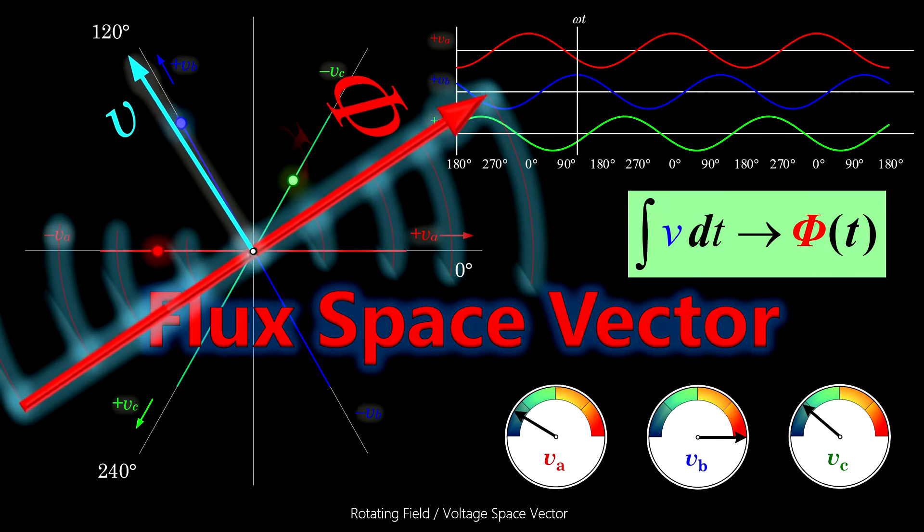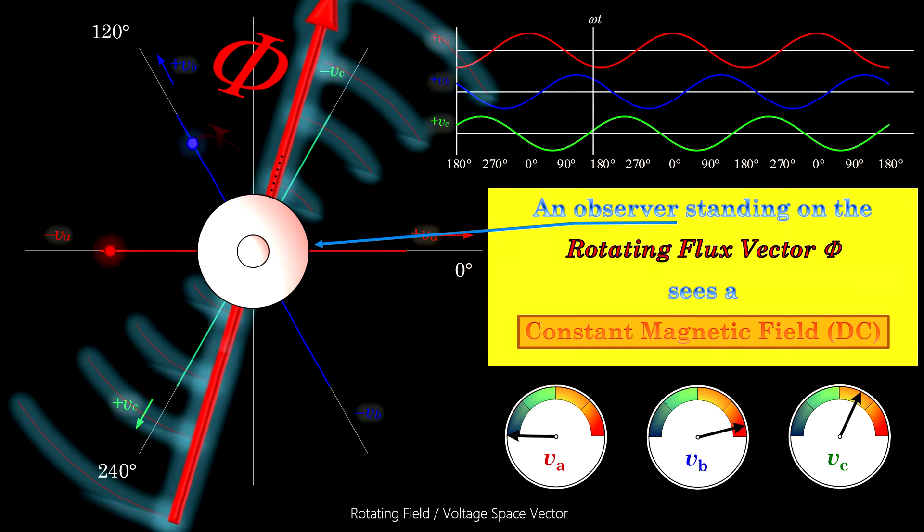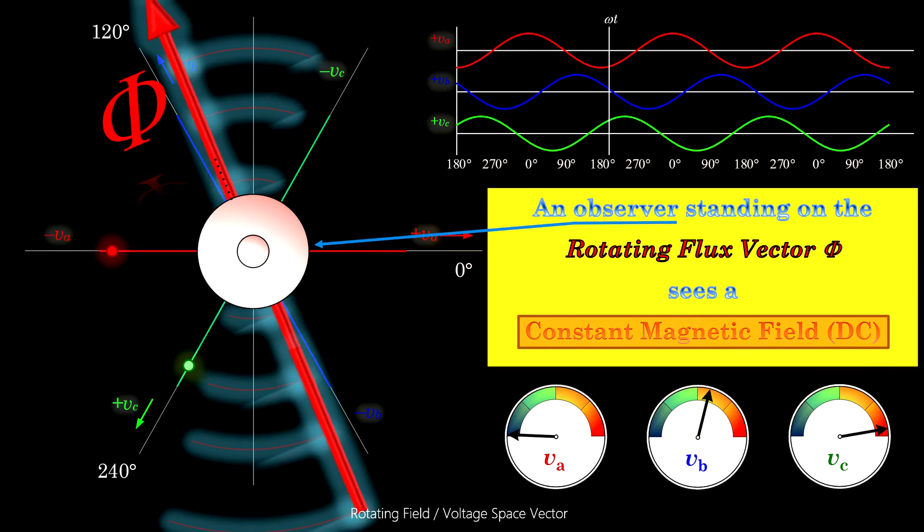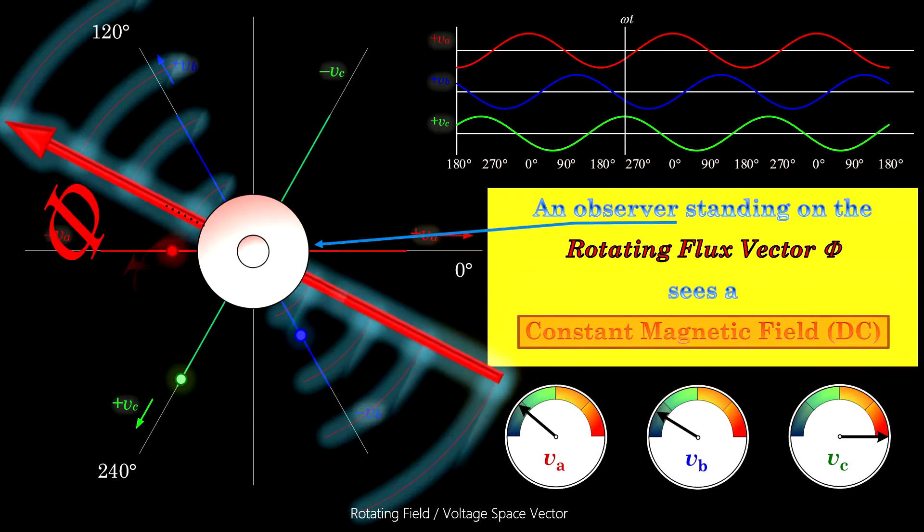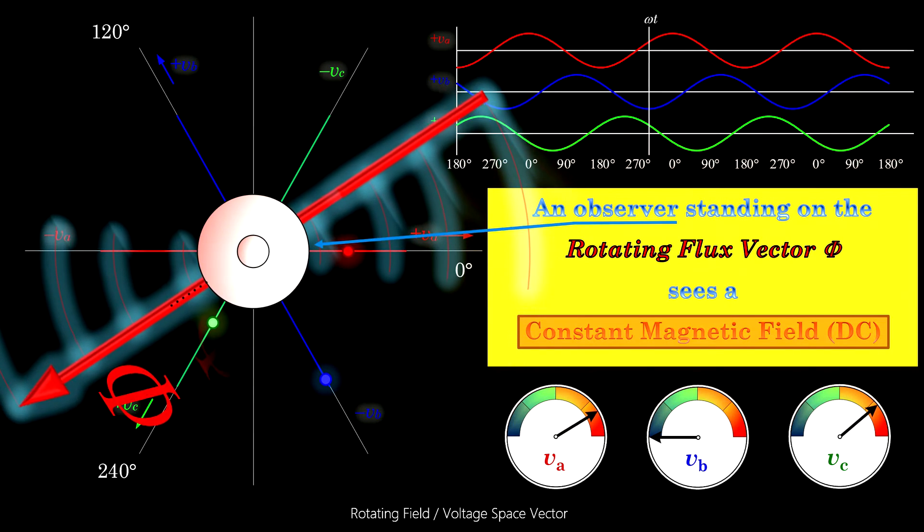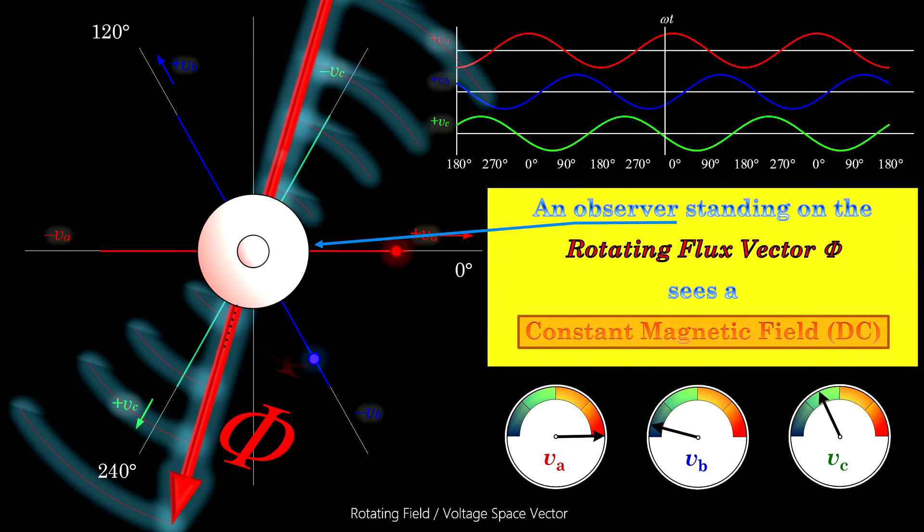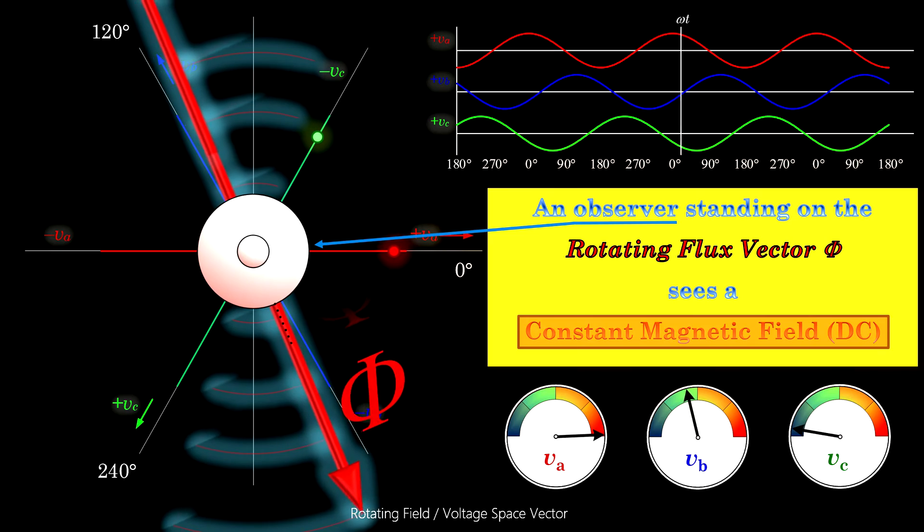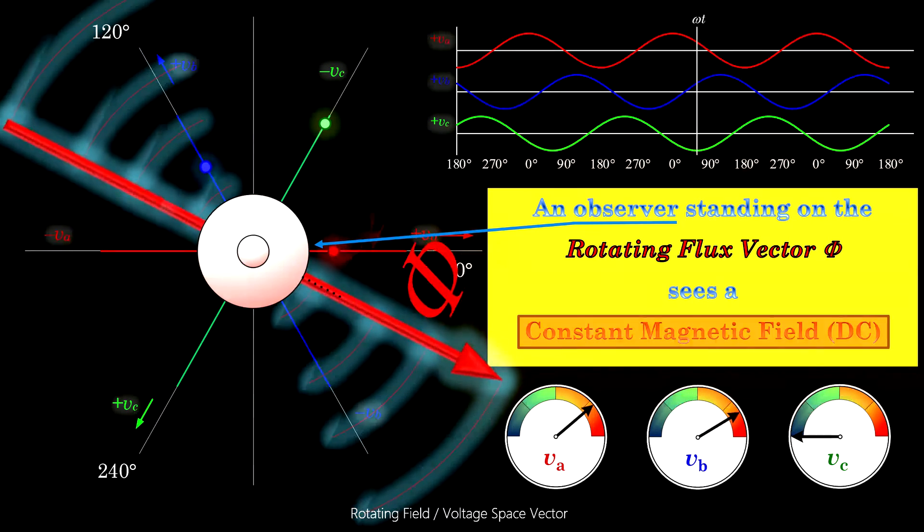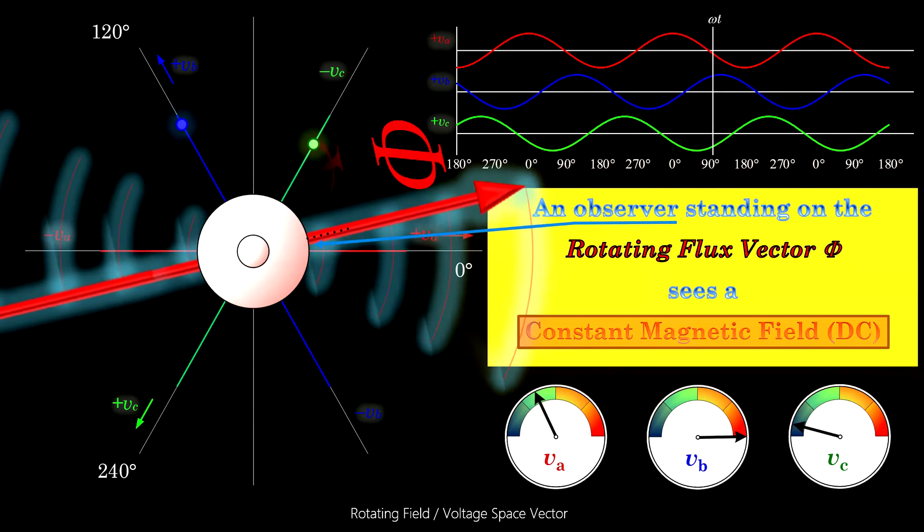Now, we place an observer on this flux vector. That is, for example, the visitor of a beer tent at the Oktoberfest, who usually should not recognise the Earth is rotating. If he does, though, it certainly is not related to Earth rotation.